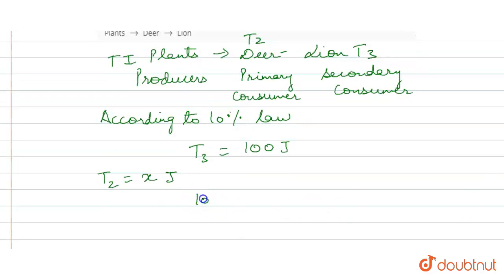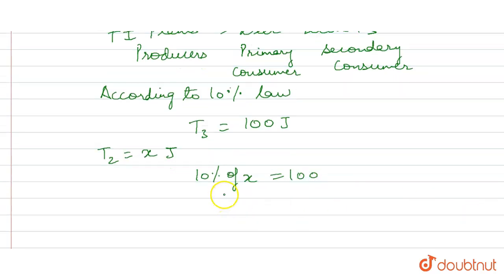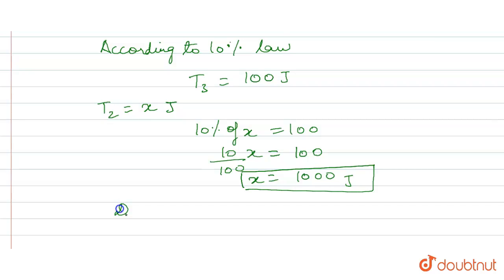So 10% of X is equal to 100 joules, which was transferred. So 10 by 100 X is equal to 100, then X is equal to 1000. That means Deer had 1000 joules.